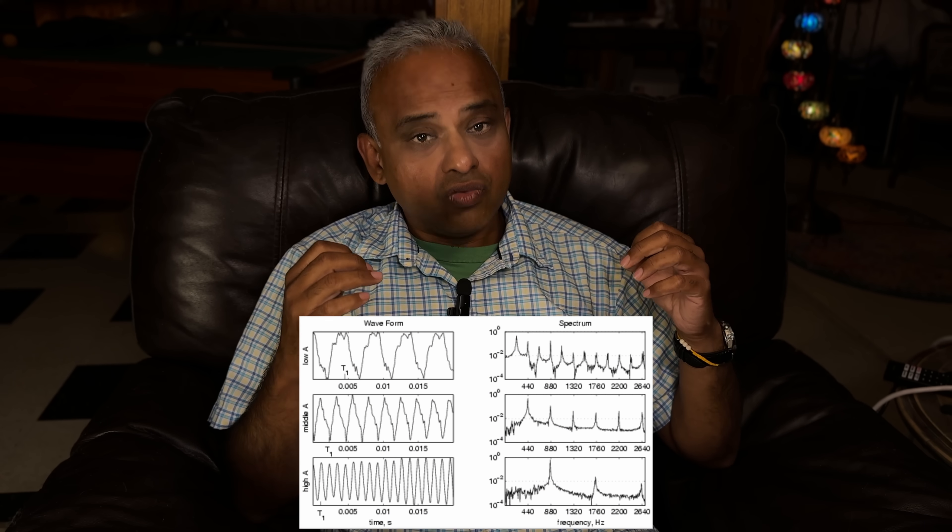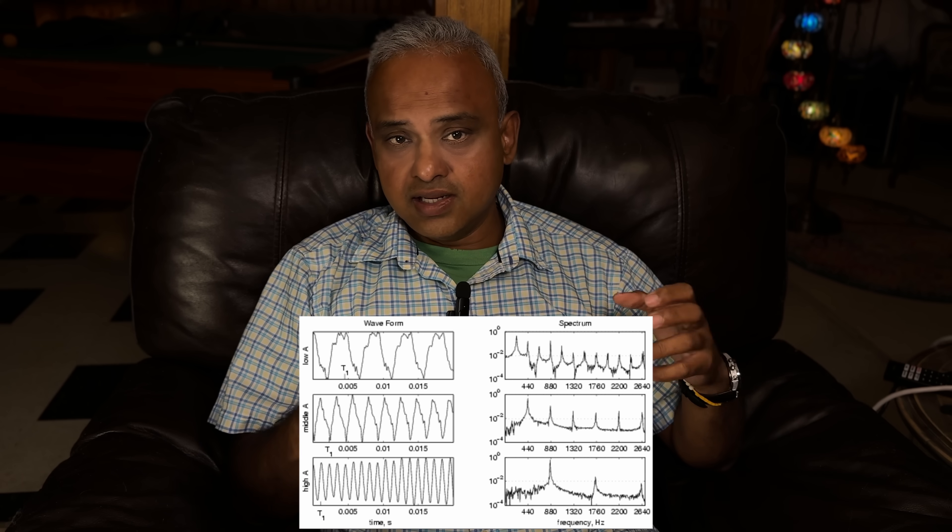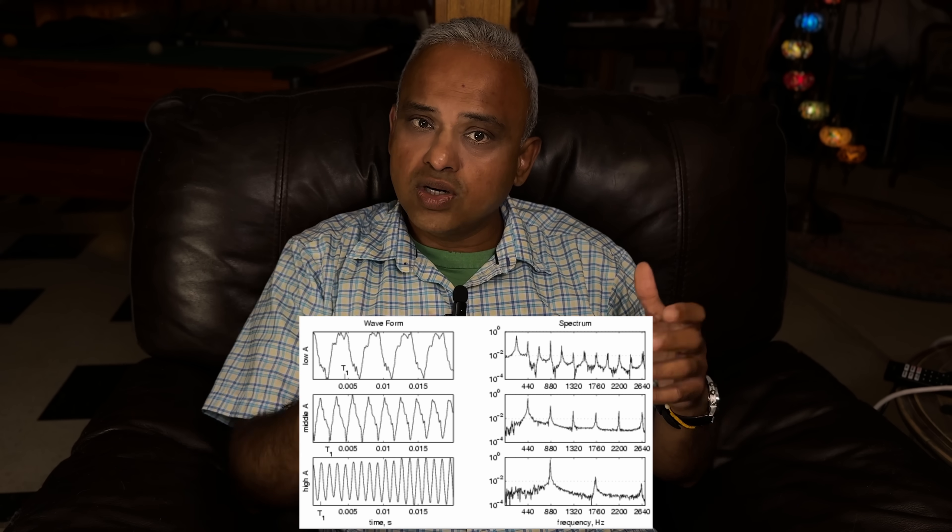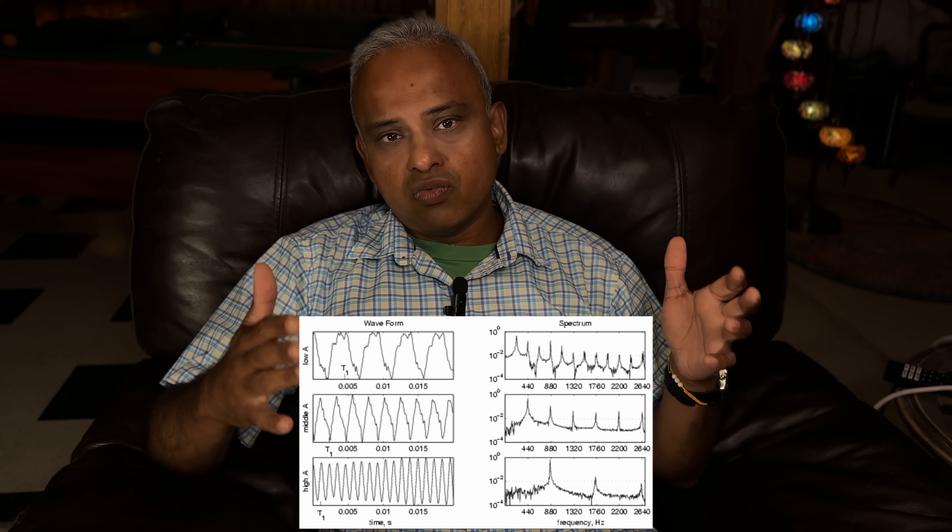Why does an A on a piano sound completely different from the same A on a guitar? They both have the same 440 hertz fundamental. The answer is timbre, and what creates timbre is harmonics. When a real instrument plays a note, it doesn't just create that one fundamental frequency - it also creates a whole series of quieter, higher frequencies on top of it. These are the harmonics, and they're always simple whole-number multiples of the fundamental. For our 440 hertz note, the second harmonic is 880 and the third is 1320 hertz, and so on.